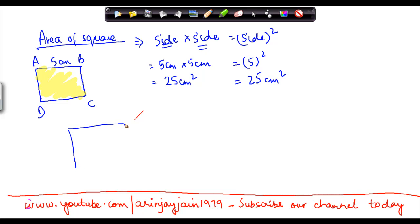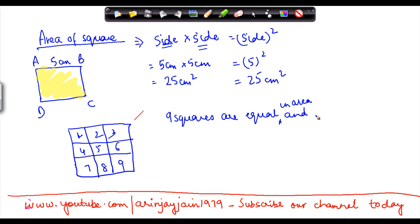Let's take a simple problem on squares. Suppose you were told that all these 9 squares are equal - and when I say equal I mean equal in area and side of each square is 5 cm.